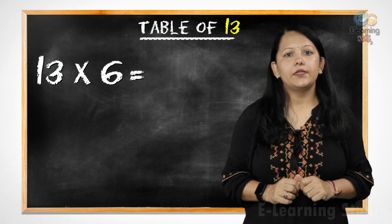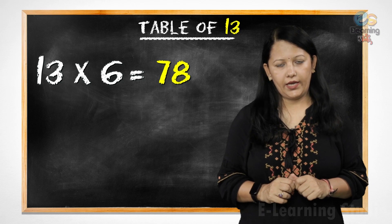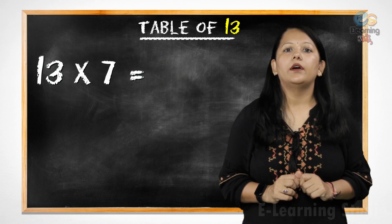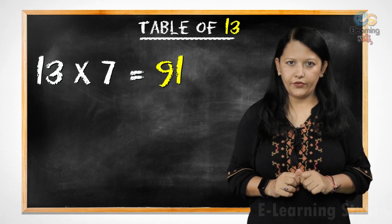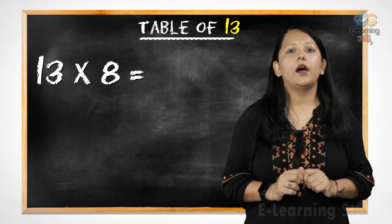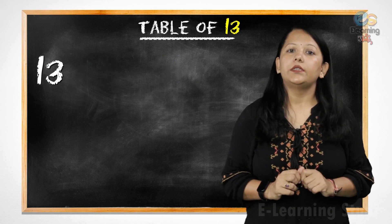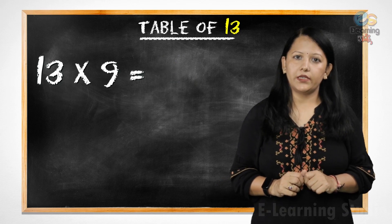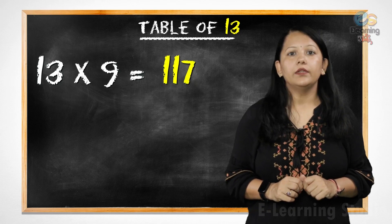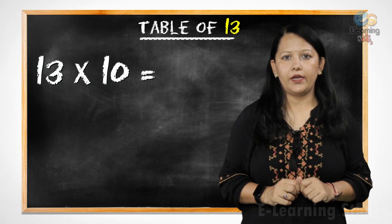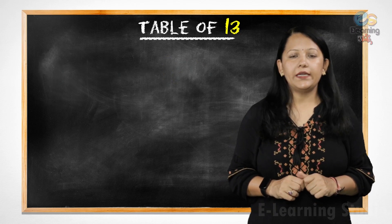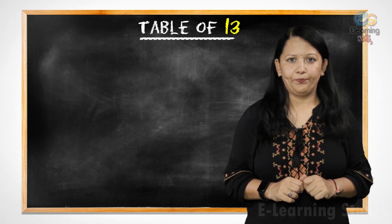13 sixes are 78, 13 sevens are 91, 13 eights are 104, 13 nines are 117, 13 tens are 130.